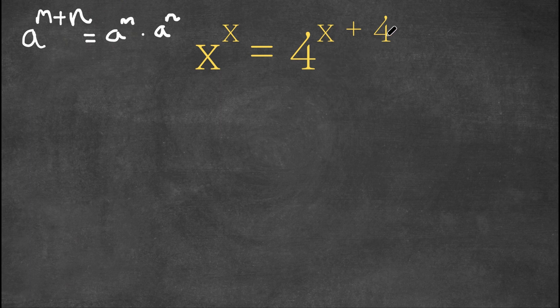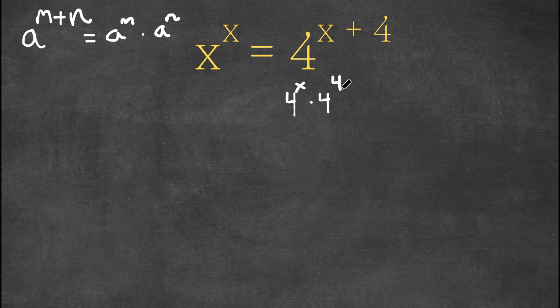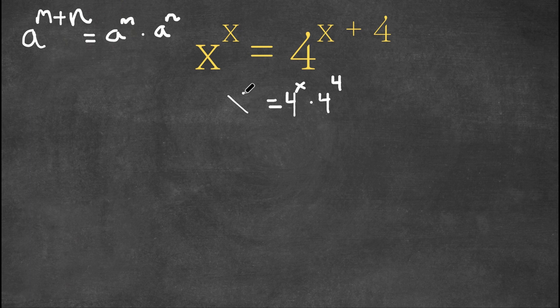So for 4 to the power of x plus 4, this can be written as 4 to the power of x times 4 to the power of 4, and this is equal to x to the power of x.